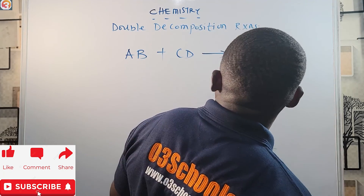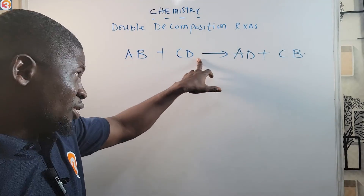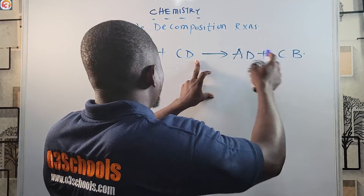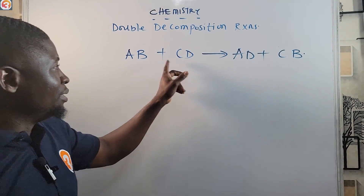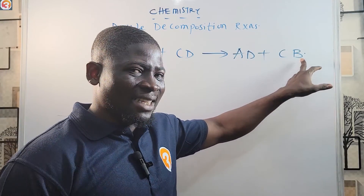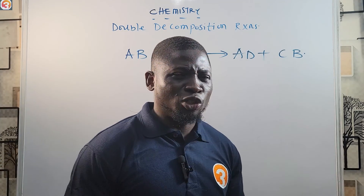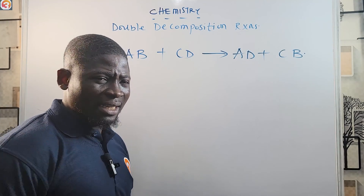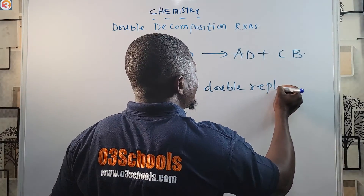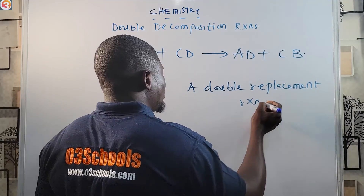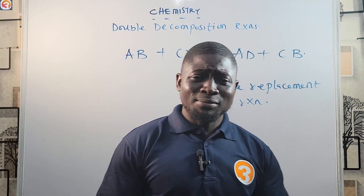The major thing you can see, from left to right, is that in this reaction B has displaced D. This used to be CD, but it is now CB. Similarly, D has displaced B. So you can see that B has replaced D, and D has replaced B. This is why a double decomposition reaction is also called a double replacement reaction.